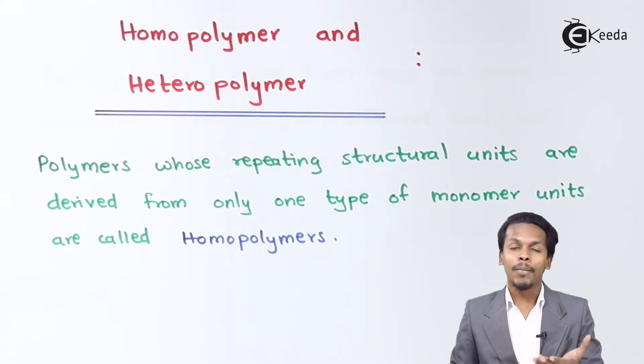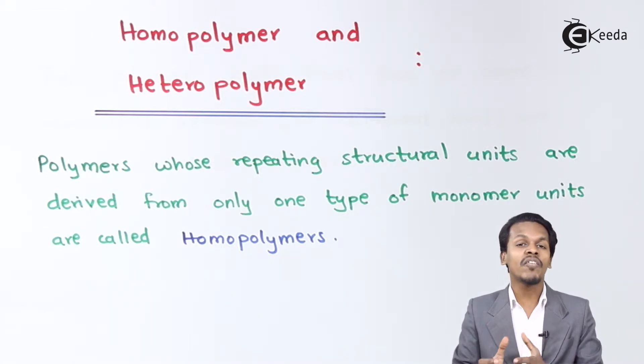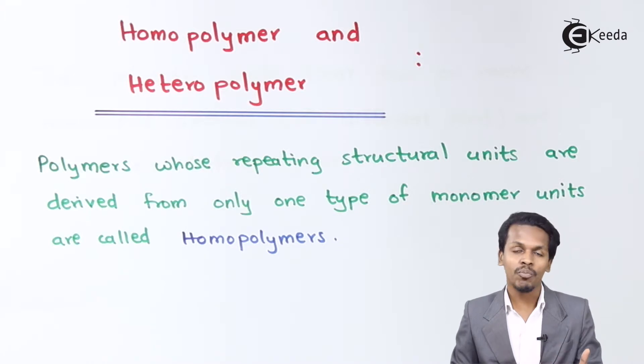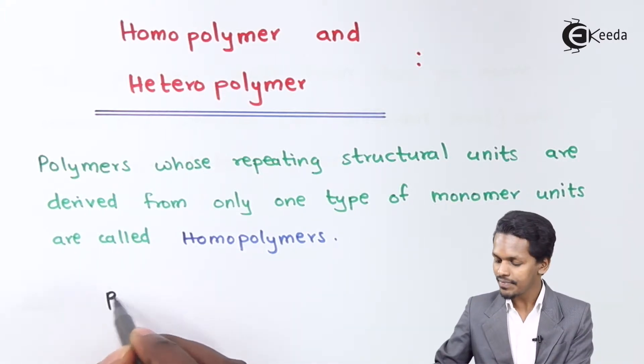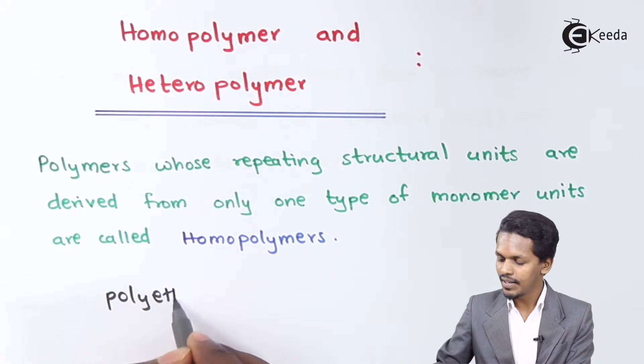For example, if you talk about polyethene, polyethene is a polymer which is made up of only one type of monomer and that is ethene. That is the reason that if you talk about homopolymer, one of the examples is polyethene.